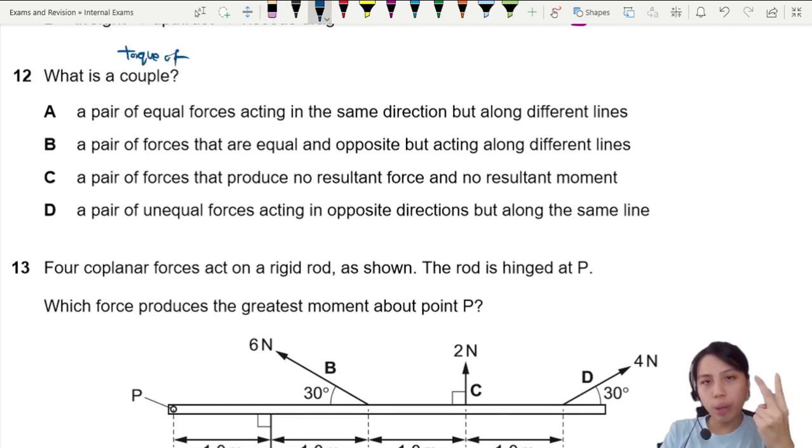It means there are two forces same magnitude but then they are both pointing in exactly opposite directions. So if this is five newton it's also five newton, and if you track their line of action...